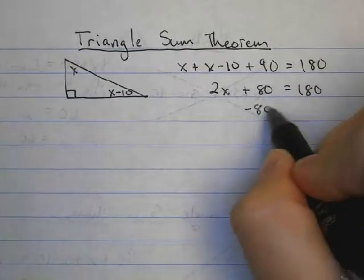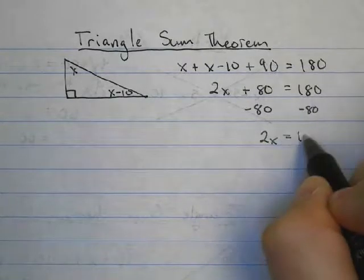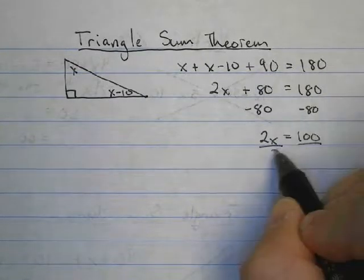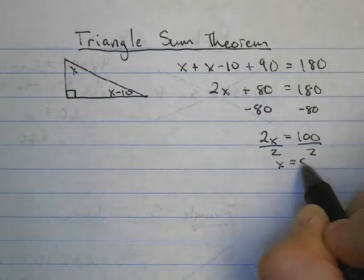Now I'll subtract 80 from both sides, so we have 2x is equal to 100. Divide both sides by 2 and we get x is equal to 50.